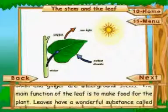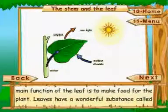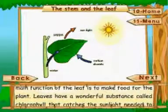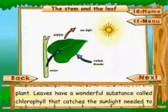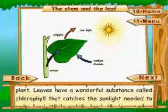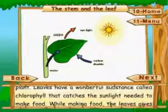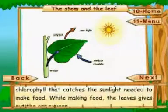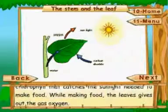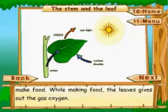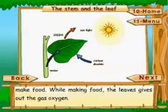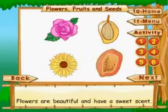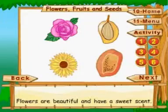The main function of the leaf is to make food for the plant. Leaves have a wonderful substance called chlorophyll that catches the sunlight needed to make food. While making food, the leaves give out the gas oxygen.